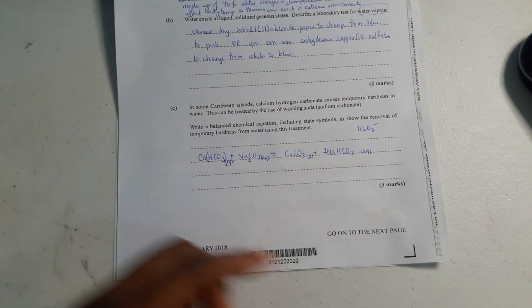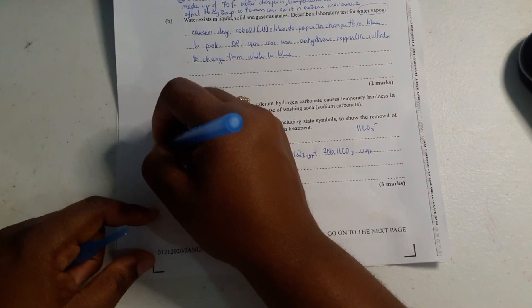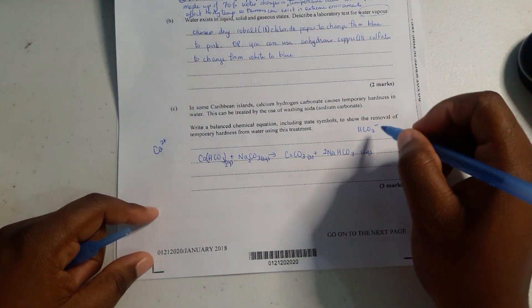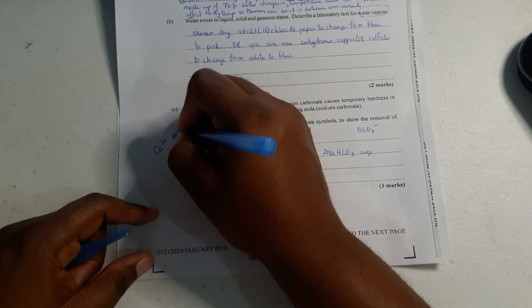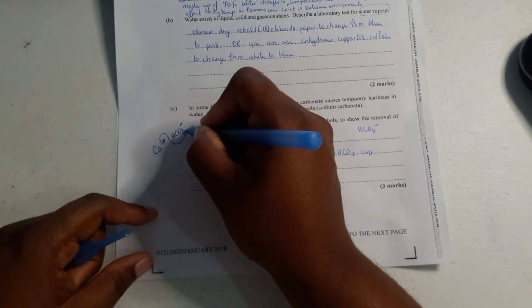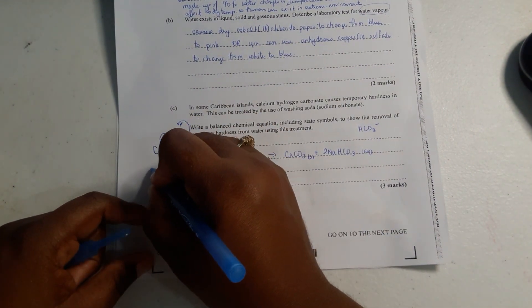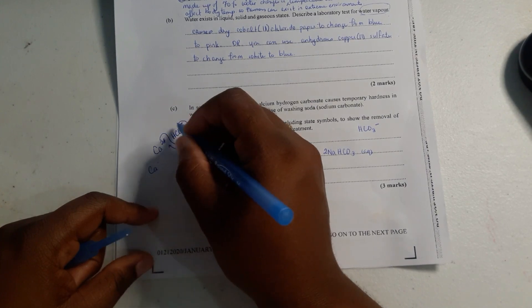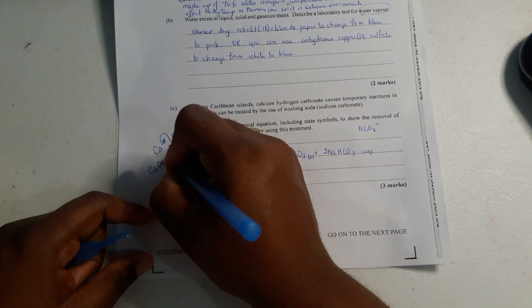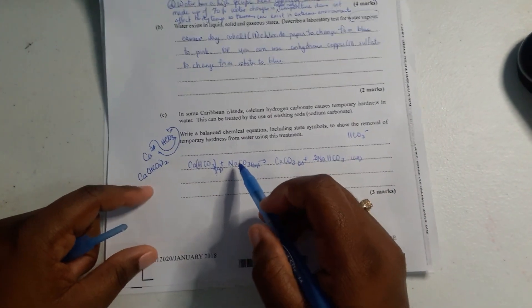So here we have calcium hydrogen carbonate. The calcium ion is Ca2+, right? And the hydrogen carbonate anion is HCO3-. So when you just ignore these signs, this goes outside and this goes outside. When they come together, you have Ca and you put brackets around the anion so that all the atoms in here will be accounted for: Ca(HCO3)2, and that's why we have it like this. It's aqueous.